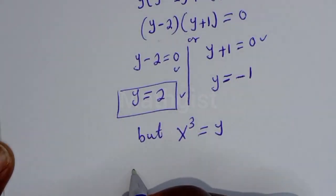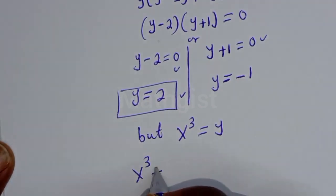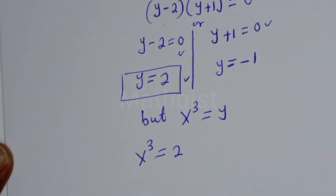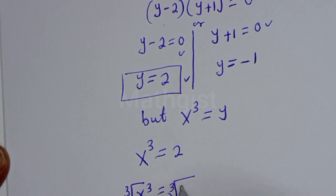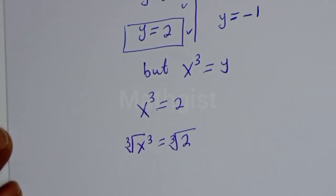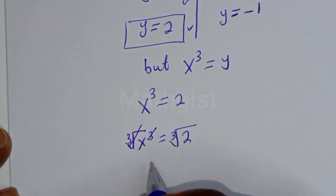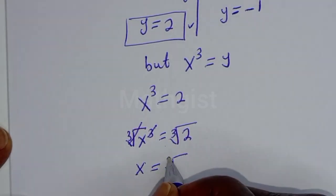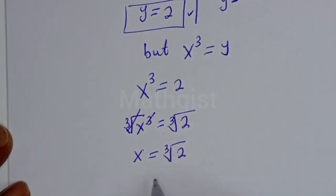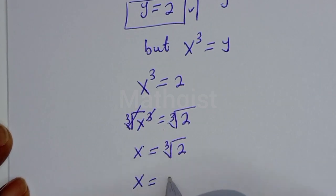From the second case, y is equal to minus 1. But s raised to power 3 is equal to y. Considering the first case: s raised to power 3 is equal to 2. Taking the cube root of both sides, the cube root of s raised to power 3 equals the cube root of 2, so s is equal to the cube root of 2. Therefore s is equal to 2 raised to power 1 over 3.